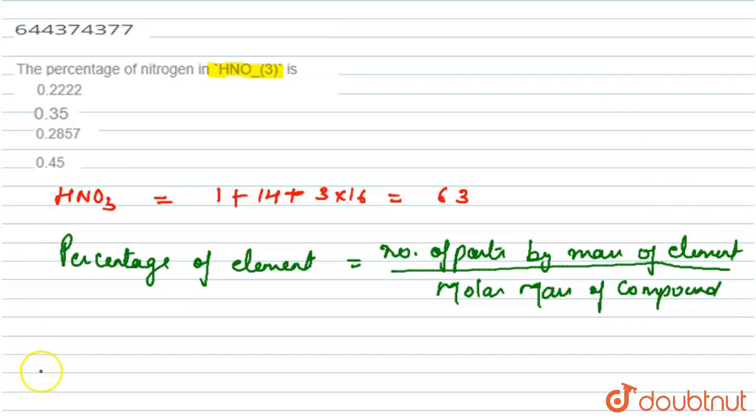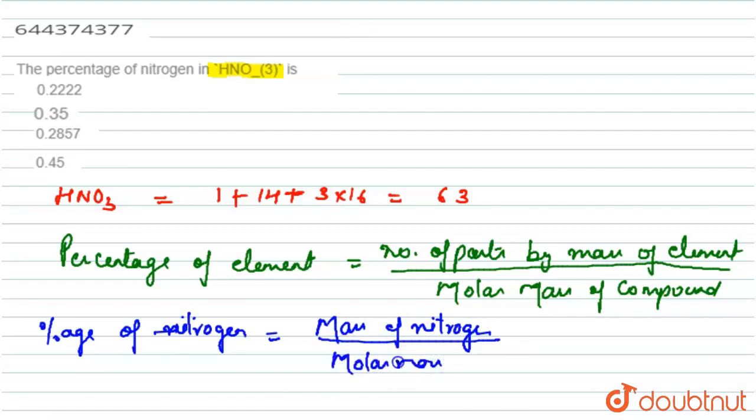Therefore, the percentage of nitrogen in nitric acid, it is equal to mass of nitrogen divided by molar mass of HNO3 into 100. And this is equal to mass of nitrogen is 14, mass of nitric acid is 63 grams per mole.